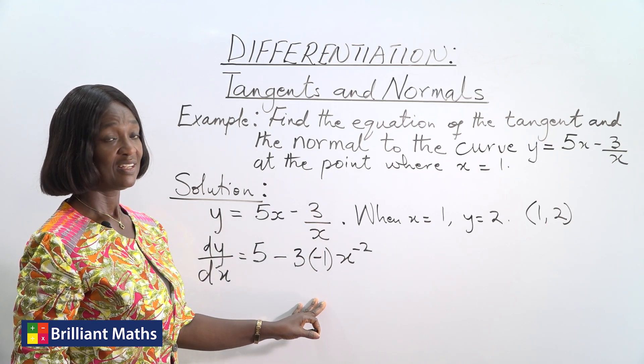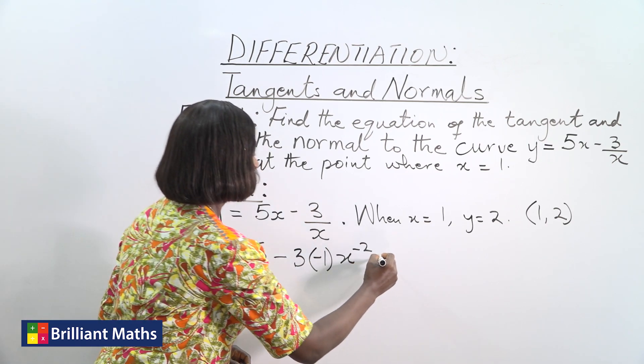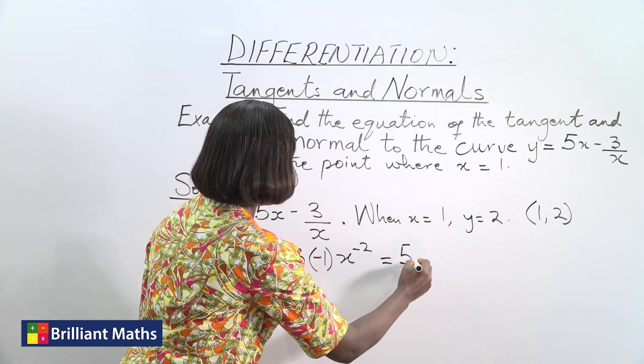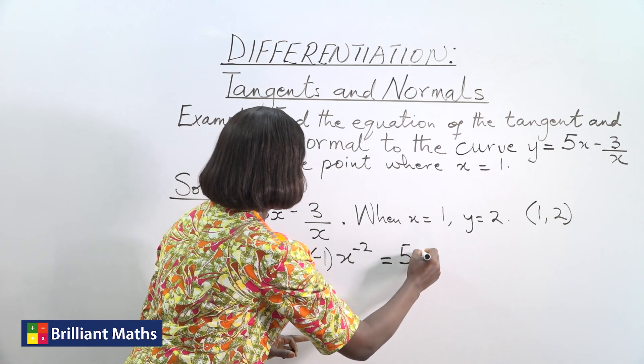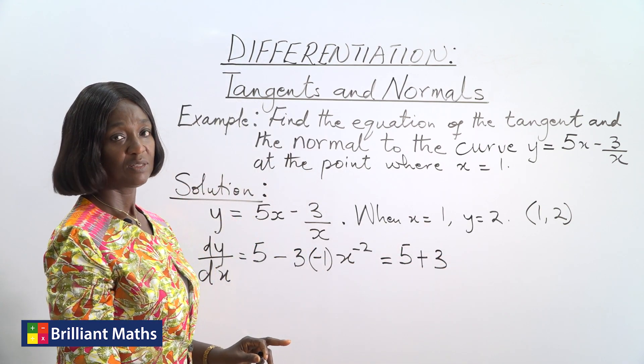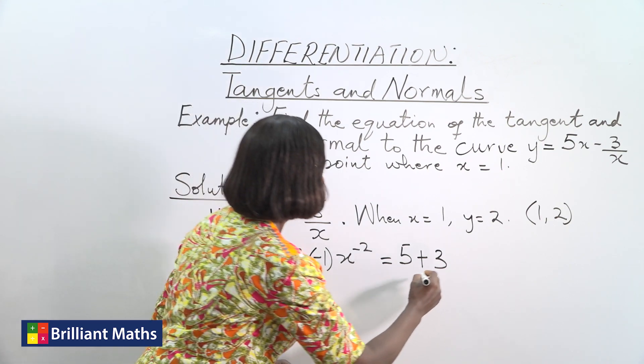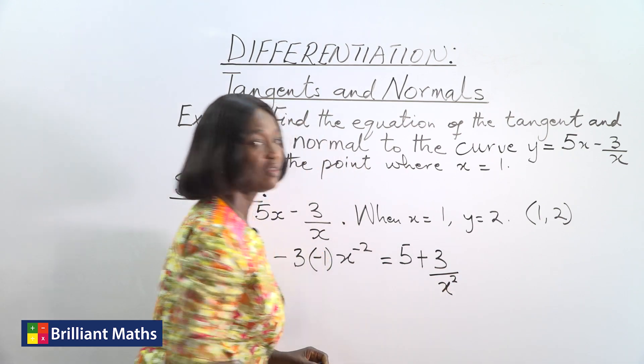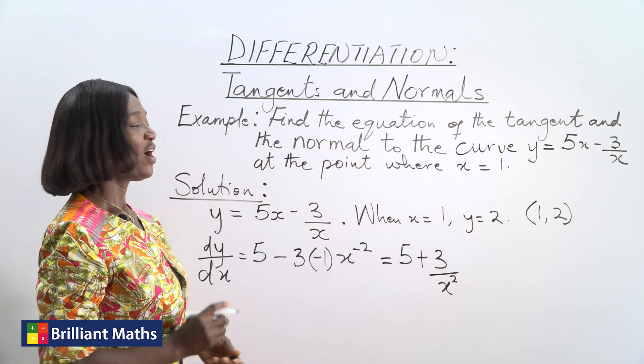So this becomes, our dy/dx is 5 plus 3 (because minus times minus is plus), plus 3/x². So that's the dy/dx.